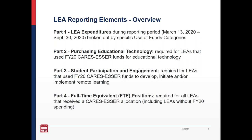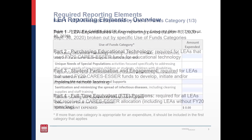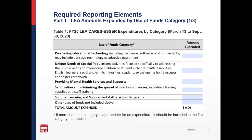Let's take a look at the first part of the form in more detail. For this section, LEAs will need to categorize their FY20 expenditures based on specific use of fund categories and give the total amount expended for each category. The use of fund categories are the following, and I just want to note that these are the full definitions we have at this time for each of the categories. We have: purchasing educational technology, including hardware, software, and connectivity — may include assistive technology or adaptive equipment.